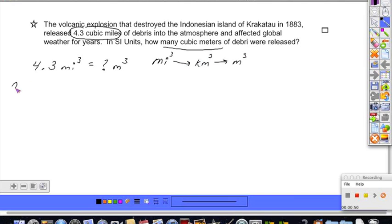Now one way to solve this problem, and there are more than one ways, so we'll look at both ways. 4.3 miles cubed. I'm going to take what I'm given and put it over 1, multiplication sign and a new fraction line. I'm going to go from miles to kilometers. Now I do know that 1.6 kilometers is equal to 1 mile.